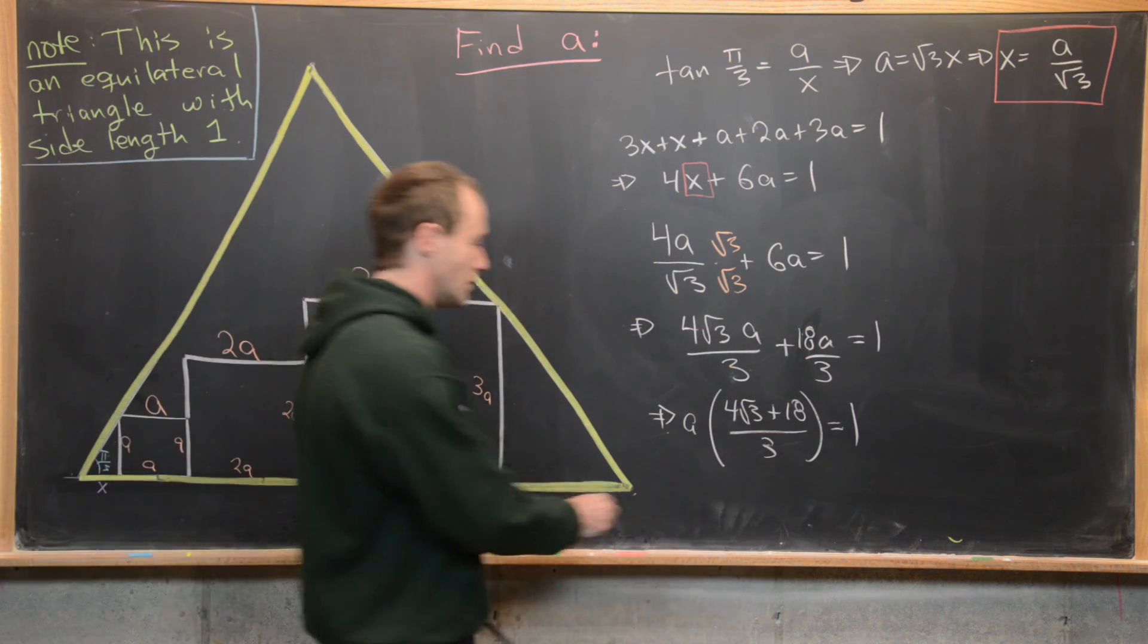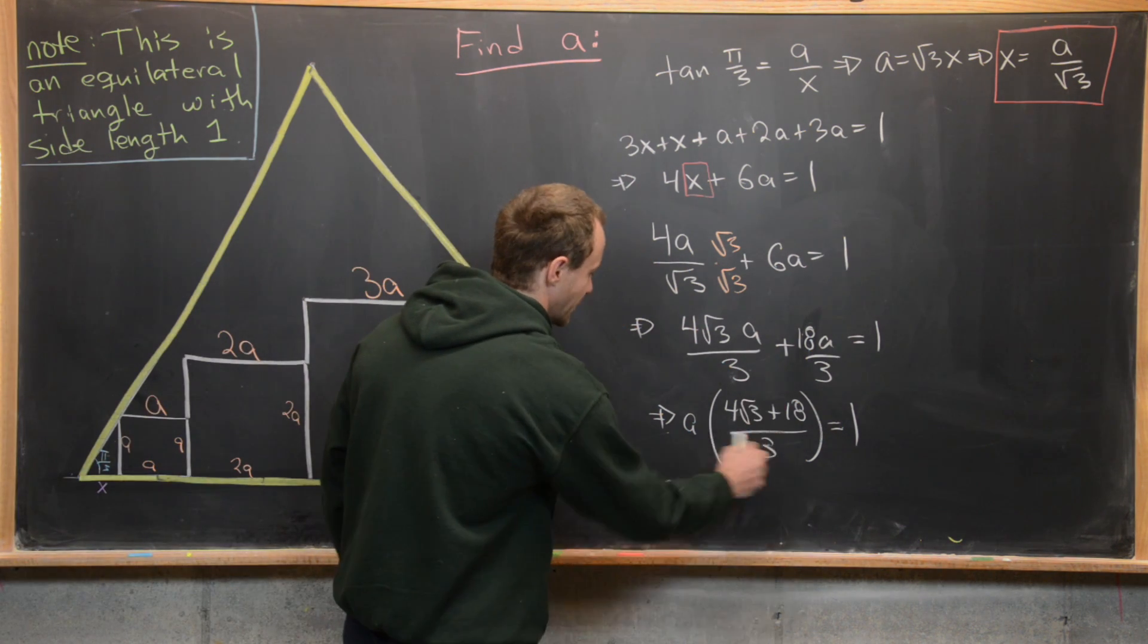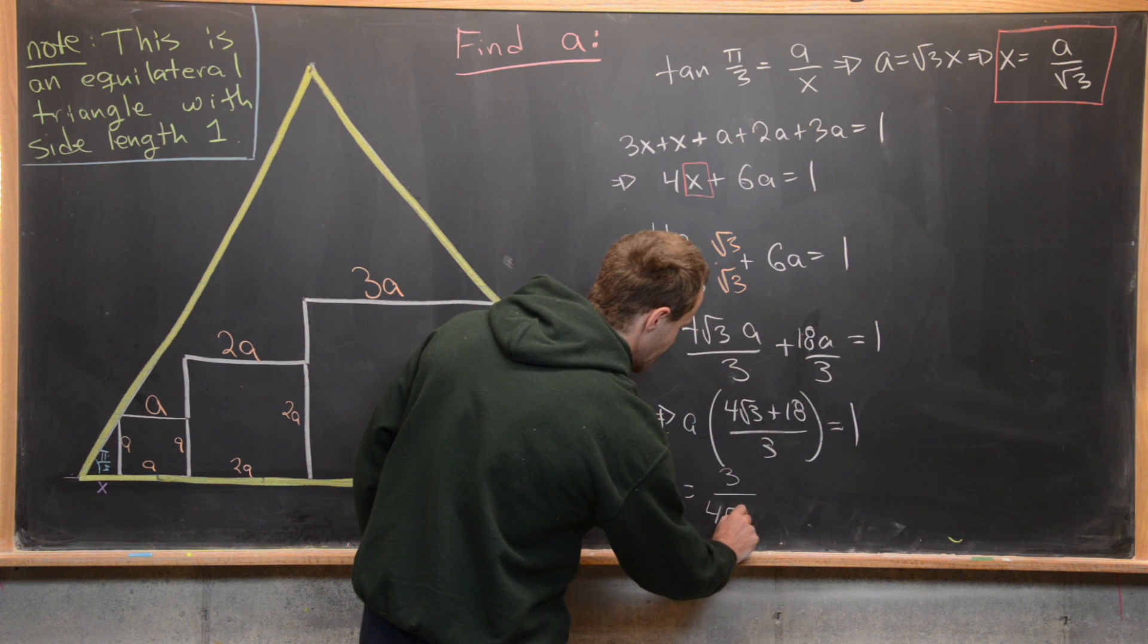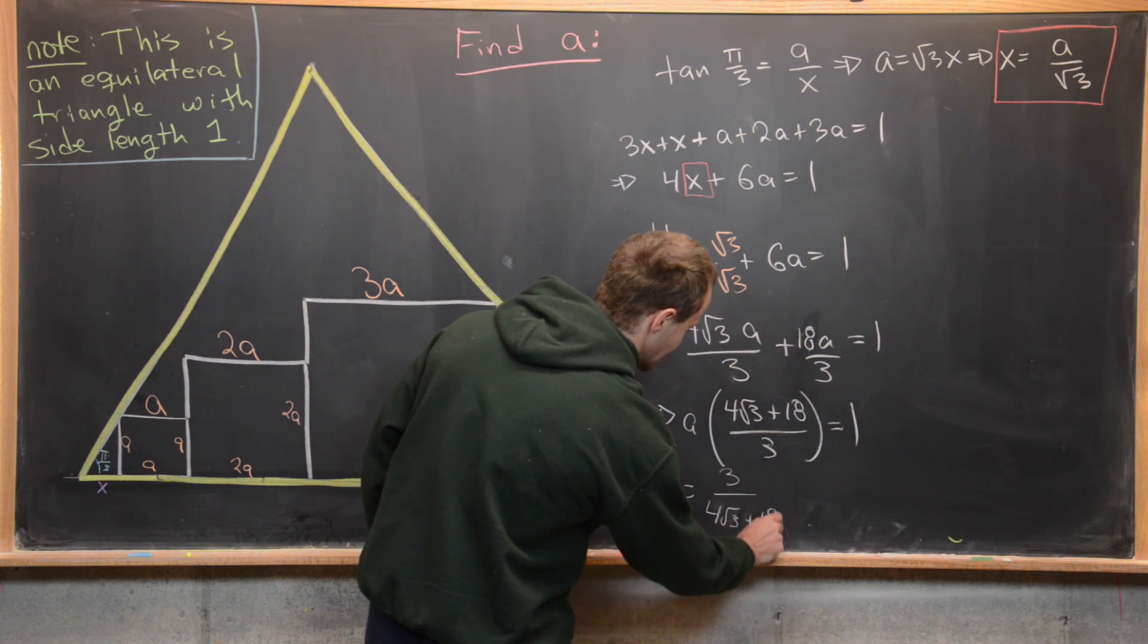Great so we can multiply by the reciprocal of this number and we get a equals 3 over 4 times the square root of 3 plus 18.